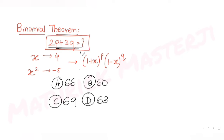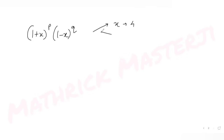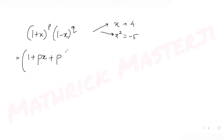To solve this, we expand using the binomial theorem. For (1 plus x) raised to p, we write: 1 plus px plus p(p minus 1) divided by 2 times x squared. We only need terms up to x squared, so we stop there, and multiply with (1 minus x) raised to q.